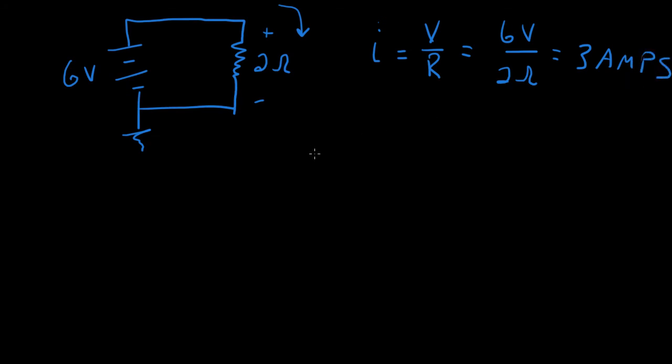Now, quite often with electronics, your resistors will have a much higher value. Quite often they'll be like maybe 2,000 ohms, which is like 2K.